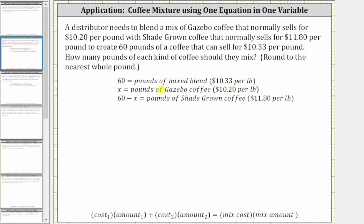Since we have x pounds of gazebo coffee that sells for $10.20 per pound, the cost times the amount is 10.2 times x. Then we add the shade-grown coffee: there are 60 minus x pounds that sells for $11.80 per pound, so the cost times the amount is 11.8 times the quantity (60 minus x).